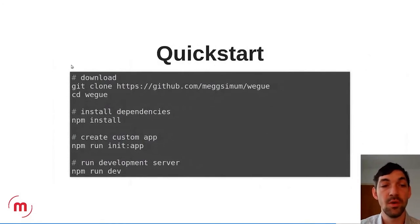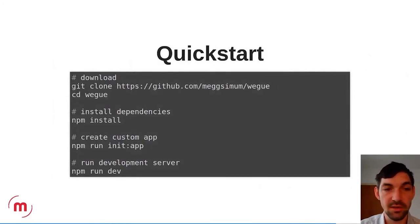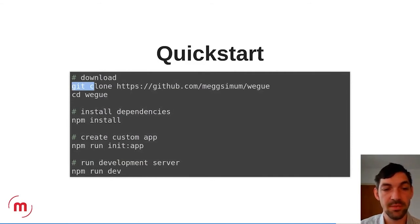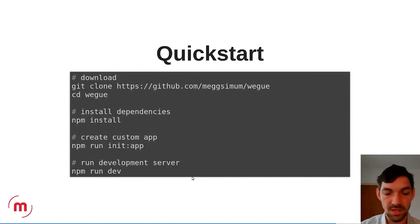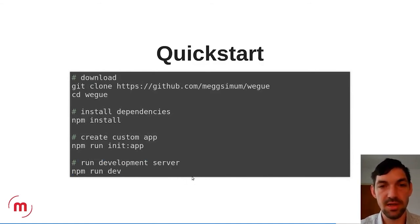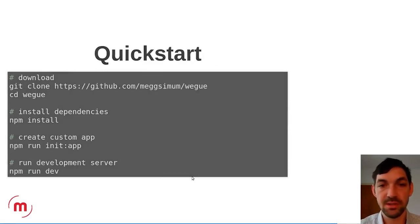To run your application, you download it with git clone, install the dependencies, create your sample app, and then start a development server. The only thing you need is to install Node.js on your machine.